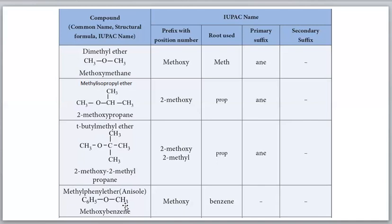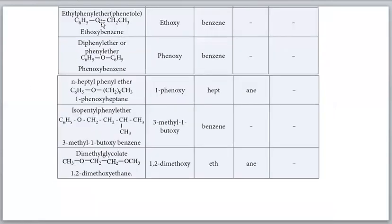For methyl phenyl ether (anisole): methyl is the smaller group so it becomes methoxy, and the benzene ring is the parent. IUPAC name: methoxybenzene. Remember: C6H5 suffix name is benzene, prefix name is phenyl.